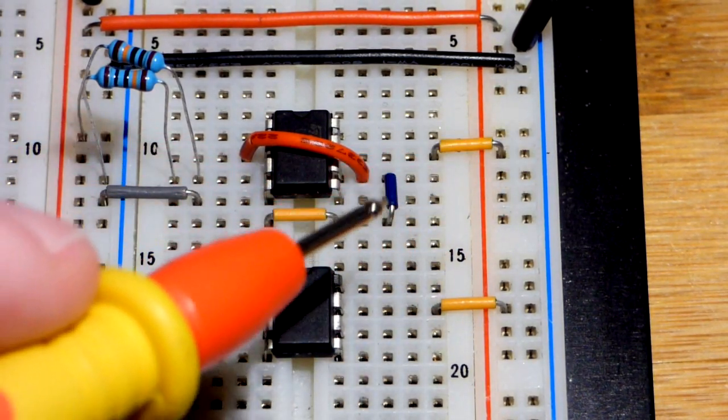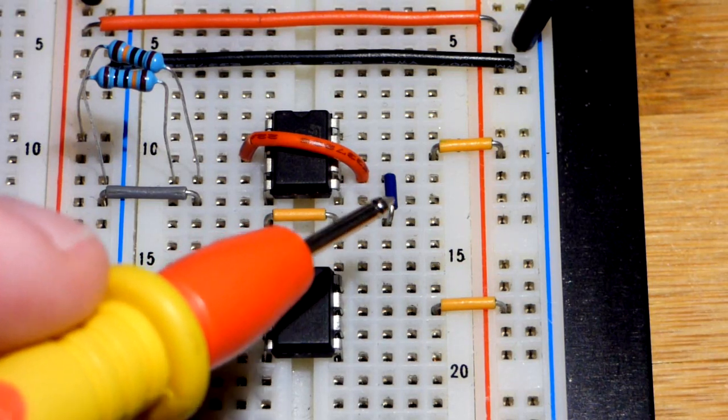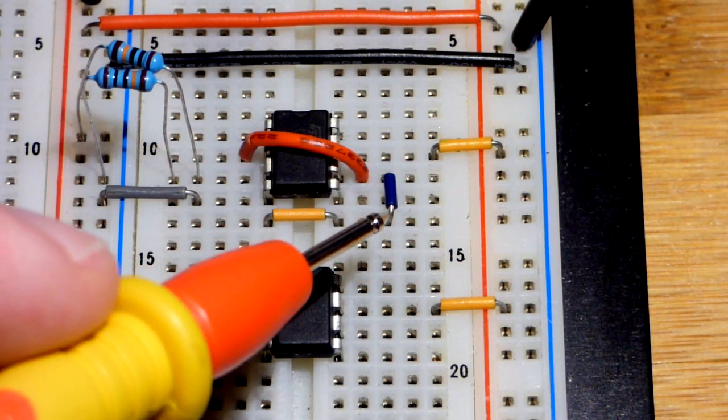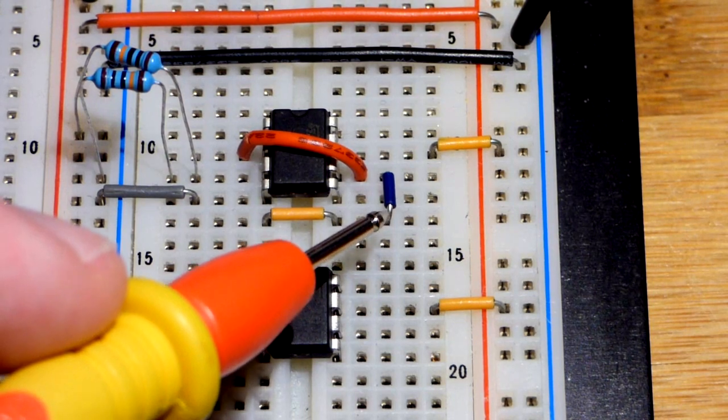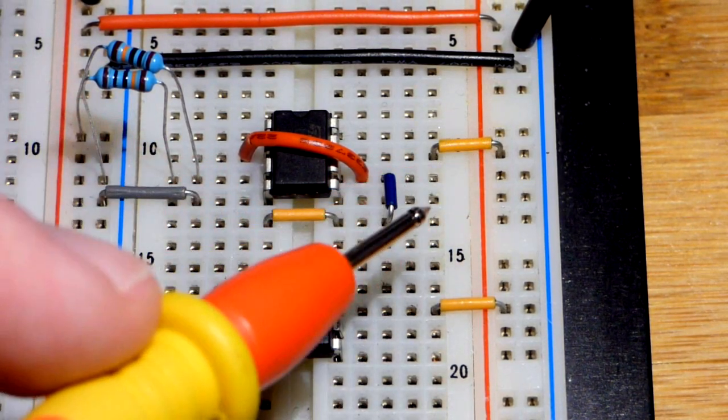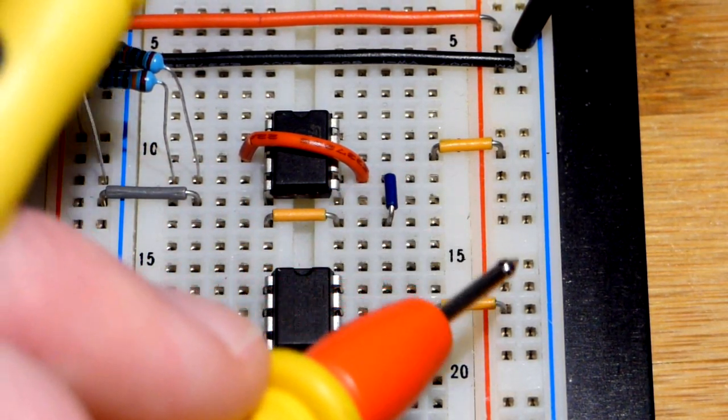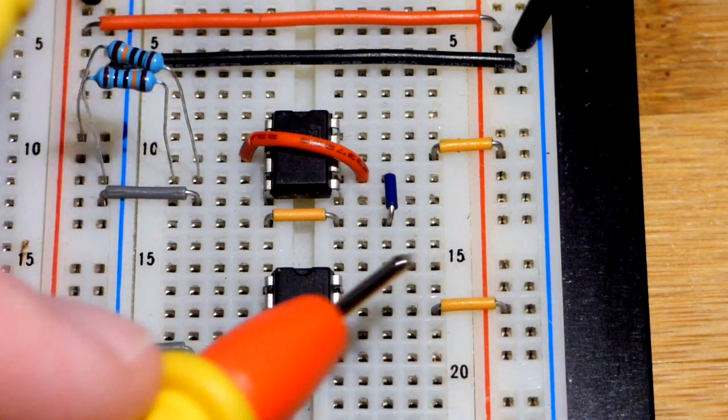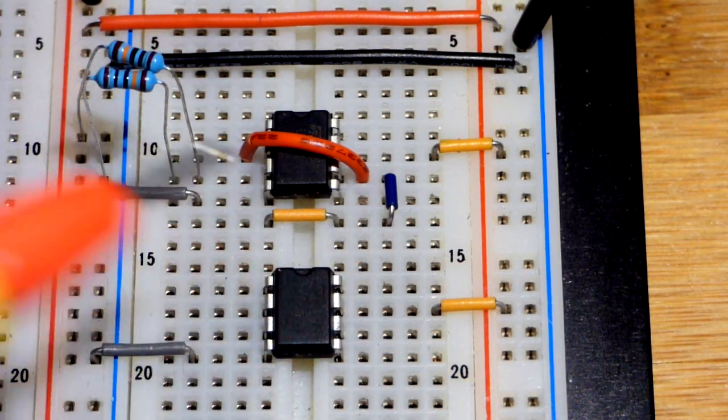With this 741 op amp, we're going to split the rail, so we have a halfway point here. In relationship to this point, this will become our ground, our zero volt reference point. We'll have a positive 9 volts and a negative 9 volts to that rail.